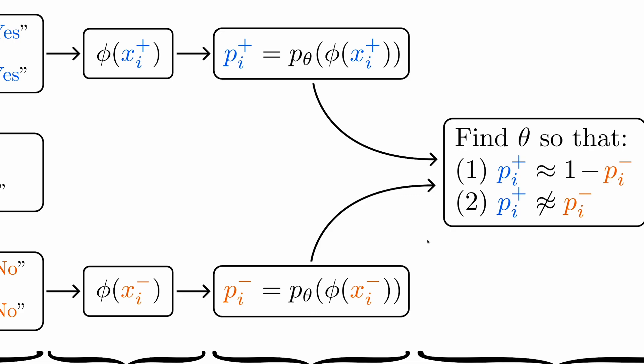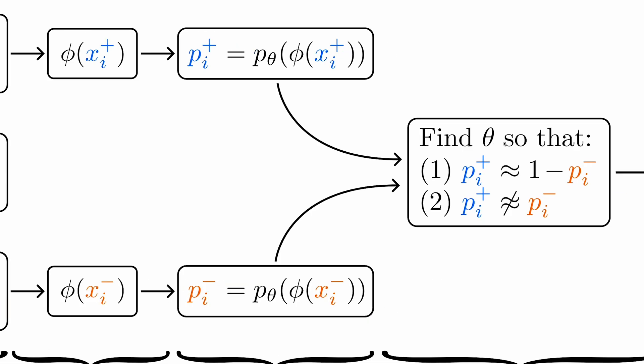But how do we learn this p theta, you may ask? This is where the consistency of truth comes in. We're going to learn theta on a bunch of contrast pairs so that the probability of one statement being true is approximately equal to 1 minus the probability that its negation is true.